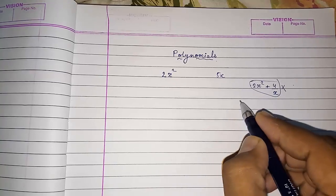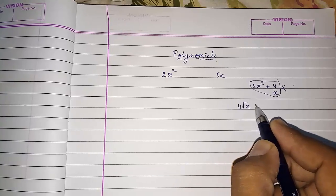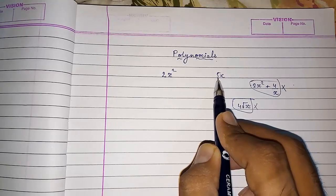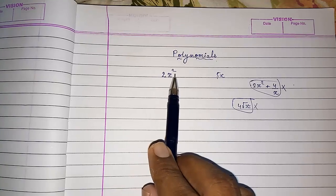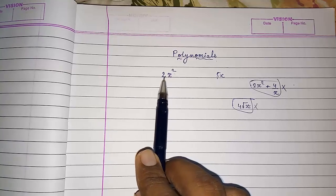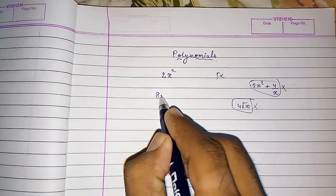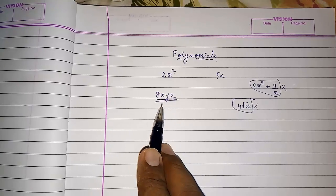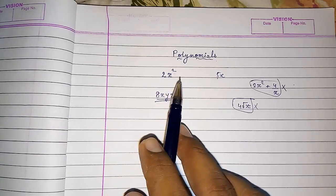If x is under a root, like 4 times root x or just root x, that is also not a polynomial. A term having a constant and a variable is called a polynomial, but the variable should be clear. If it has power 2, it means x into x — it is still x only. For example, 8xyz is also a polynomial, but it is a polynomial with three variables.